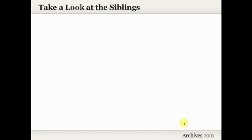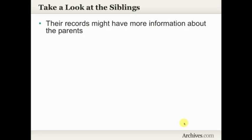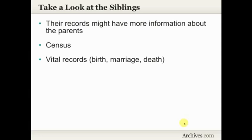So when you are stuck on an ancestor — you can't find any more clues, can't identify the parents, can't find a mother's maiden name — stop for a moment and think about what you have looked at for the siblings. Because those siblings and the records they created might have more information about the parents, as we have seen in all of these examples today. Think about finding them in all of the census records in which they should appear. Look for all of their vital records — birth, marriage, and death records. And definitely look for their obituaries. You never know what little clue you'll pull out that could really break through that brick wall.